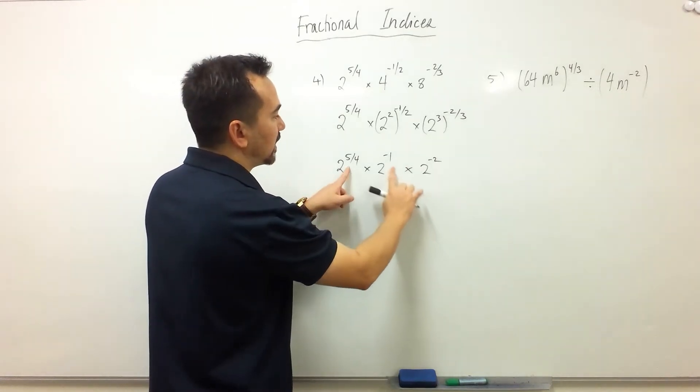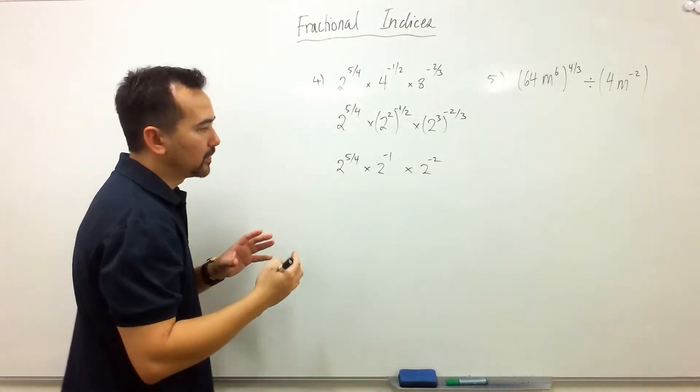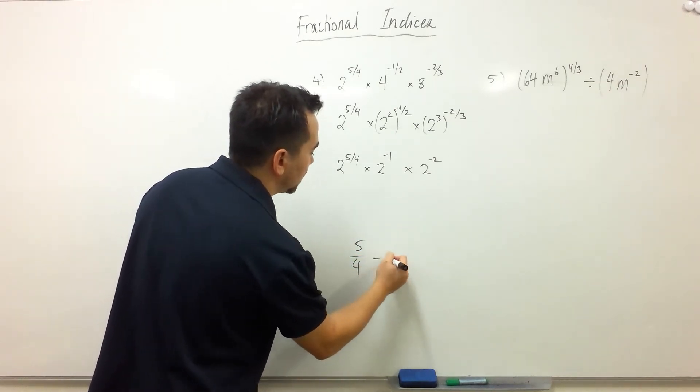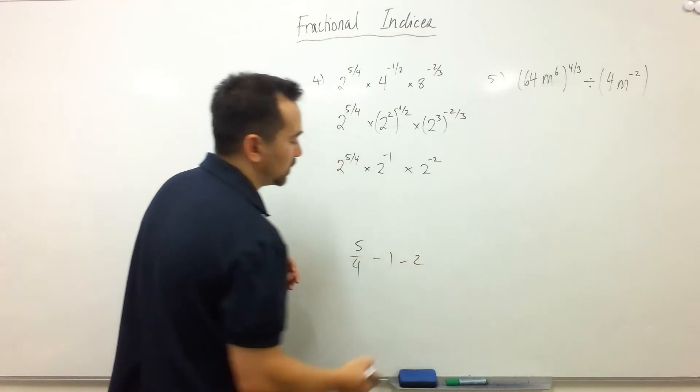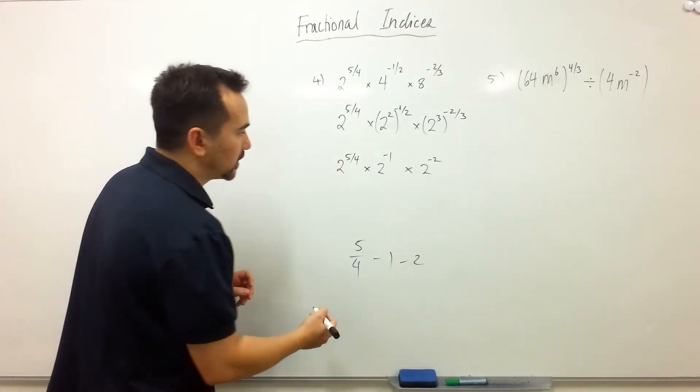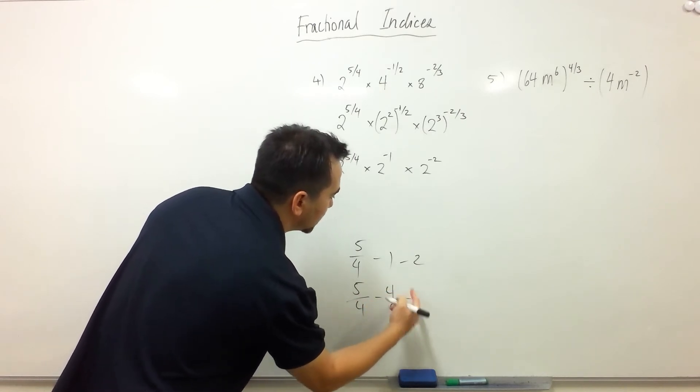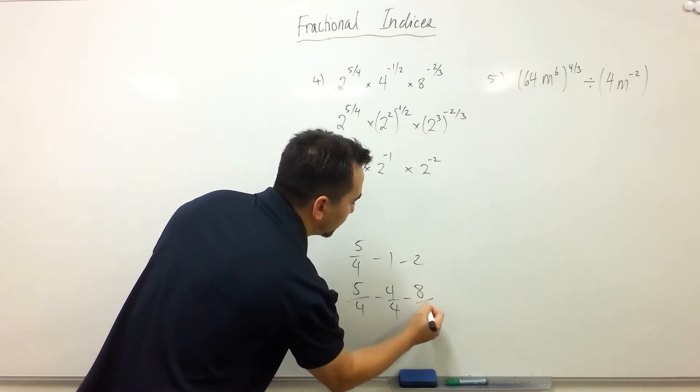When we're multiplying you're allowed to add the powers together. So we need to do 5 on 4 take away 1 take away 2. We could say that 1 is the same as 4 on 4 and 2 is the same as 8 on 4.